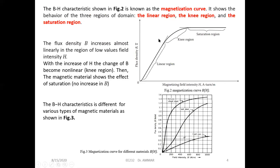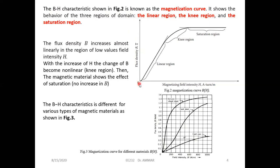Let's see the magnetizing curve. The magnetizing curve is when we plot B in terms of H, so the B-H characteristics shown in figure two. It shows the behavior of the three regions of the domain. Here, H is the field intensity on the x-axis and B, the flux density, is on the y-axis.